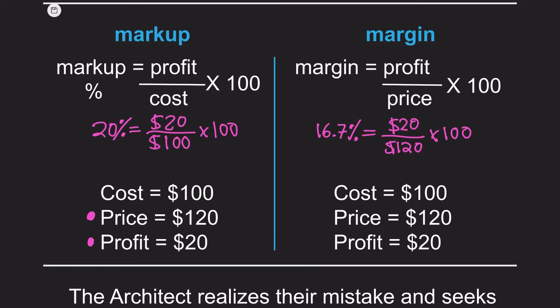A $20 profit from a markup perspective takes that $20 profit and divides it by the $100 cost, multiplied by 100 — the markup percentage is 20%. This means the architect used a 20% markup to price their final billable rate of $120. Markup is typically used in businesses where costs are fixed, or if a new business owner doesn't understand all the costs and wants to generate revenue right away. But as the business grows and costs change, are they really generating a 20% profit? A $20 profit divided by the price of $120, multiplied by 100, equals a 16.7% profit margin.